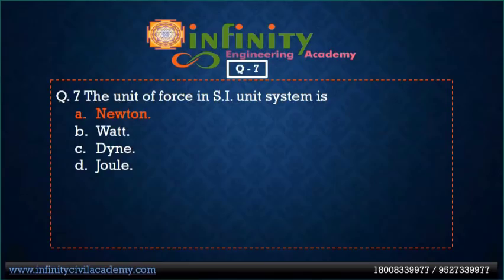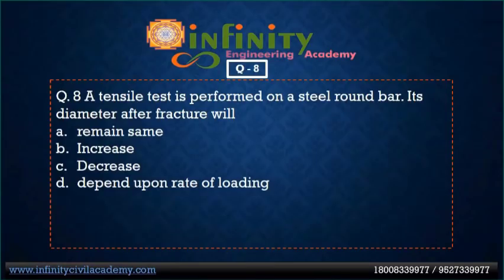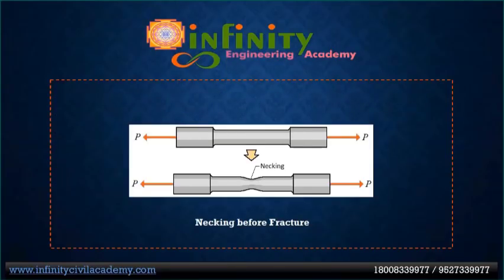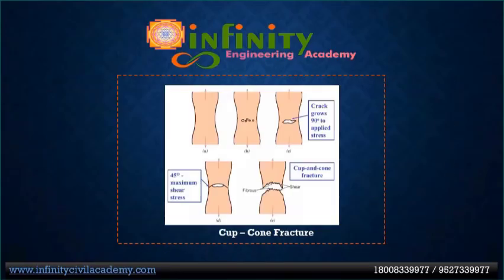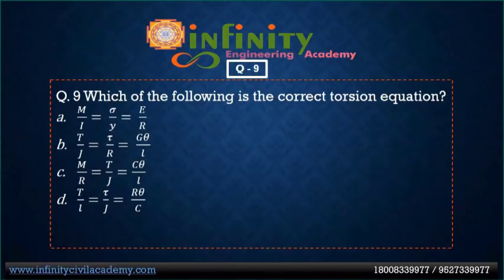Question 8: A tensile test is performed on a steel round bar. Its diameter after fracture will be — option A: remains same, option B: increases, option C: decreases, option D: depends on rate of loading. Option C is correct — diameter decreases after fracture. As a result of tensile loading, the material stretches and experiences plastic deformation, producing necking, and then cup-and-cone failure occurs.